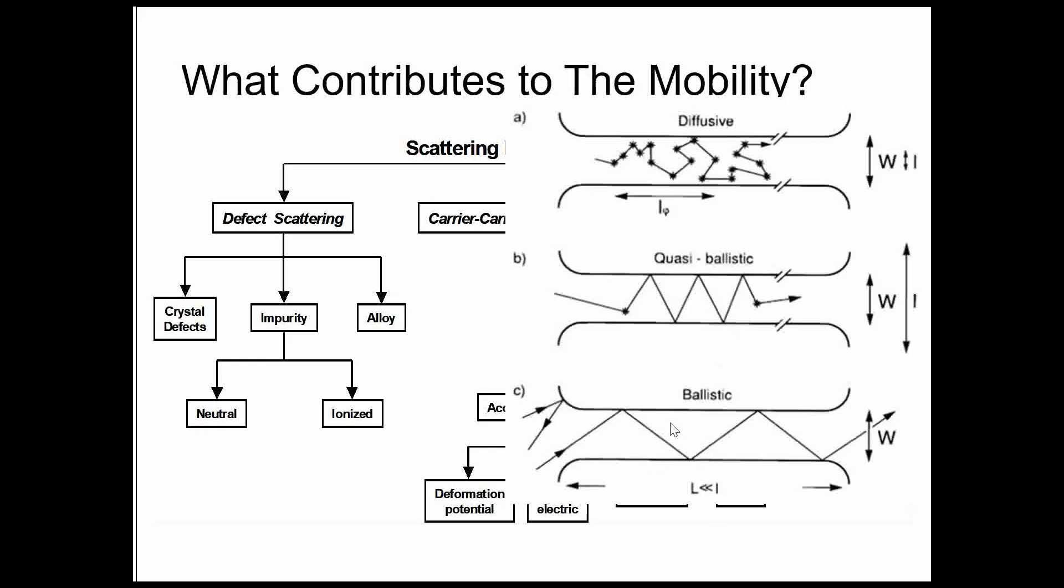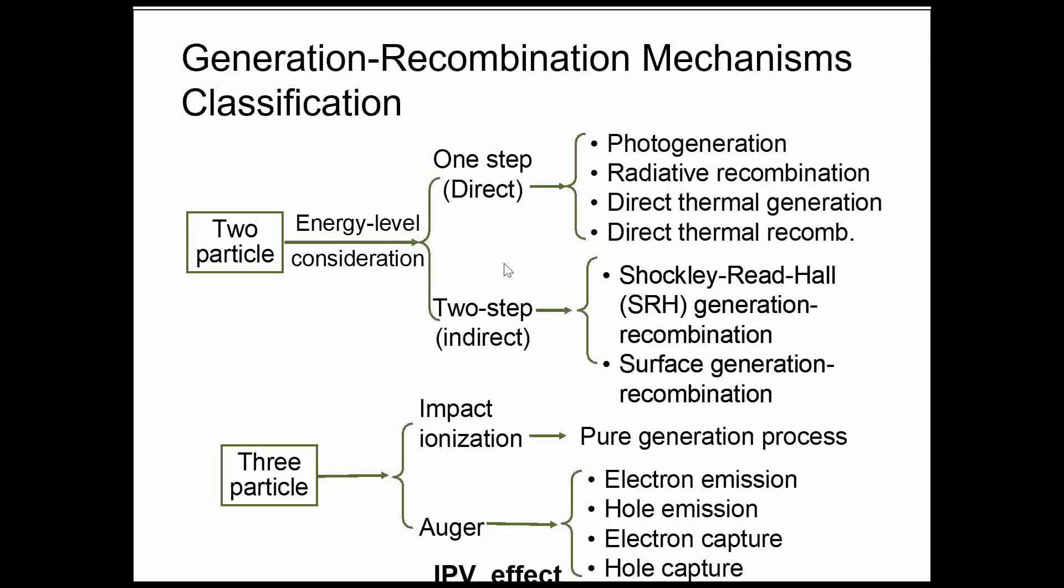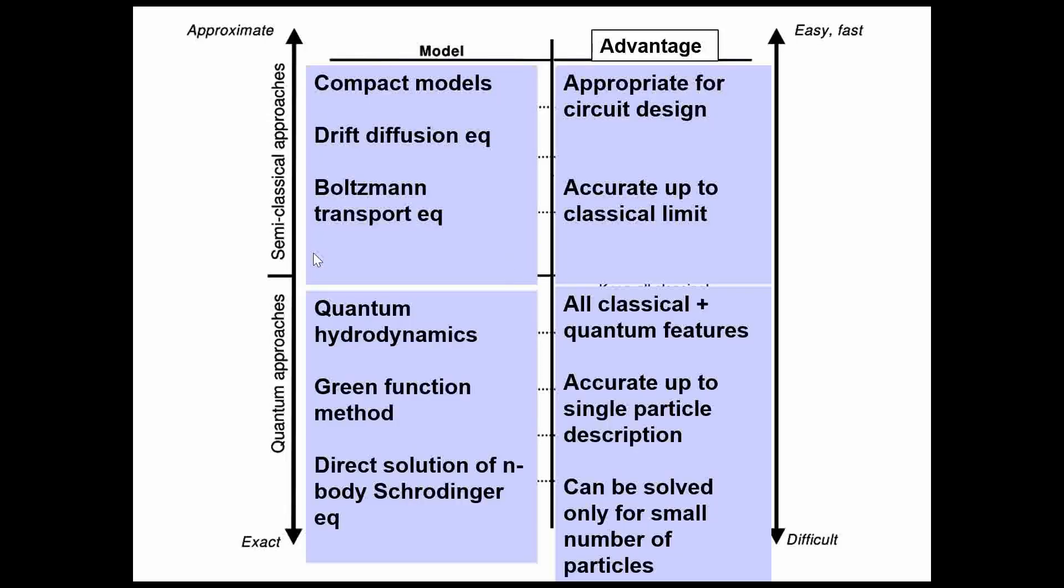Simulating purely quantum is complex. So you see the semi-classical approach, what we do, we have compact models, drift-diffusion equations, Boltzmann transport equation only. These approximations we are considering, we are modeling by these approximations. The advantage here is appropriate for circuit design, accurate up to classical limit. They are roughly giving out the result or device performance. The result is more or less accurate.